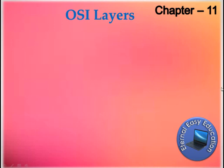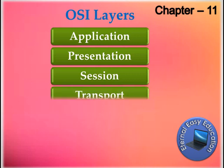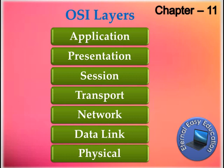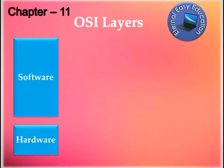In TCP/IP there are only four layers. The OSI model has seven layers: Application, Presentation, Session, Transport, Network, Data Link, and Physical.